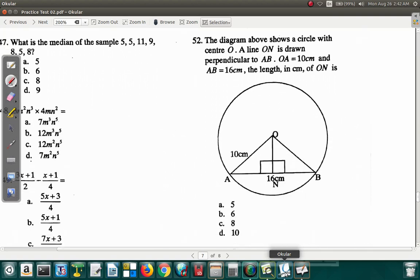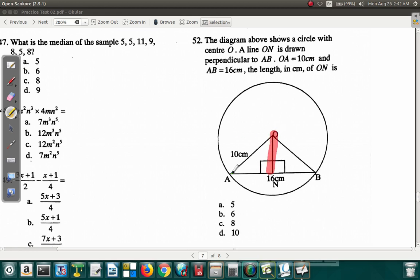So, the diagram shows a circle with center O. A line ON is drawn perpendicular to AB. So the center is O. I have ON. Drawn 90 degrees perpendicular to AB. OA is 10. So this is 10. And AB is 16. The length in centimeter of ON is, the length in centimeter of ON.